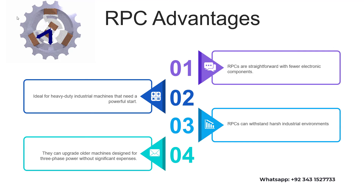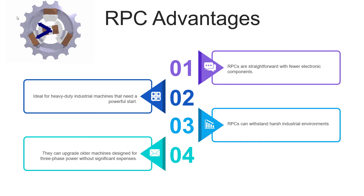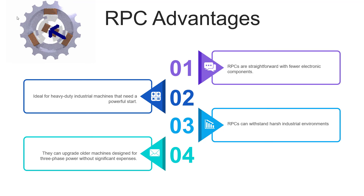Let's discuss the advantages of RPC. First is simplicity — RPCs are straightforward with fewer electronic components. Second advantage is high starting power, ideal for heavy-duty industrial machines that need a powerful start. Third advantage is durability — RPCs can withstand harsh industrial environments. Fourth advantage is compatibility — they can upgrade older machines designed for three-phase power without significant expenses.